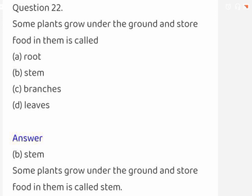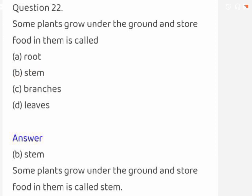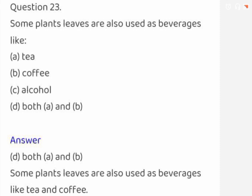Some plants grow underground and store food in them; this is called: root, stem, branches, or leaves. The correct answer is stem. Some plant leaves are also used as beverages like: tea, coffee, alcohol, or both A and B. The correct answer is both A and B.